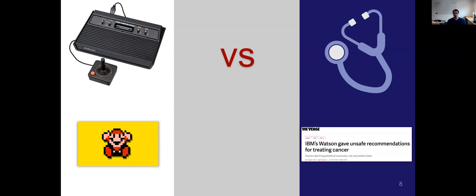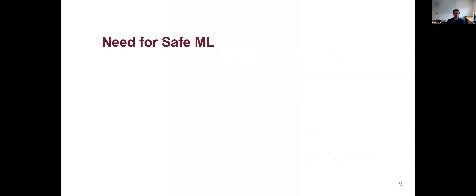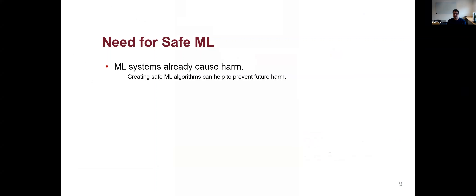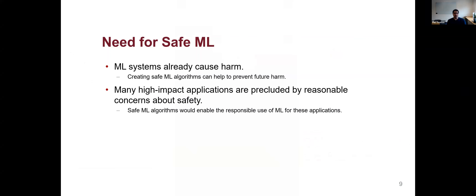There is a strong need for safe machine learning algorithms. ML systems have already caused harm, and by creating safe ML algorithms we can prevent future harm. Second is that missed opportunity cost — there are many applications that would be reasonable, but responsible use of machine learning is precluded by very reasonable concerns about safety.